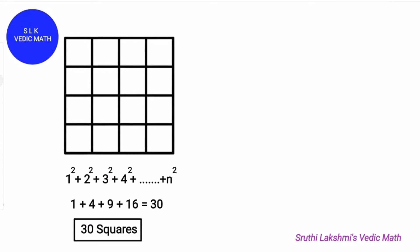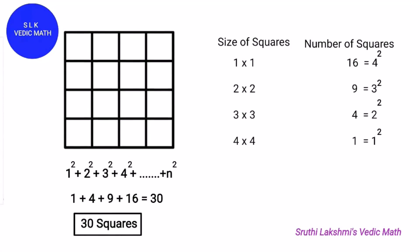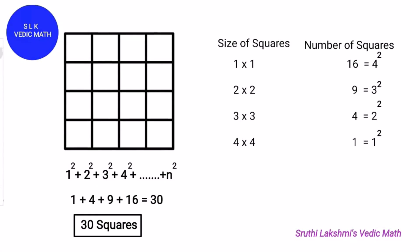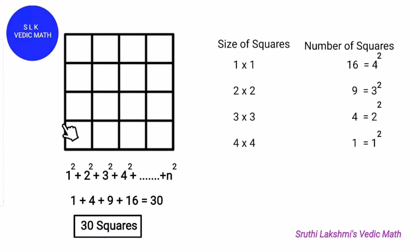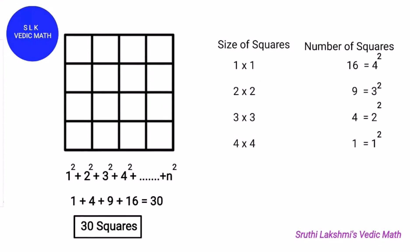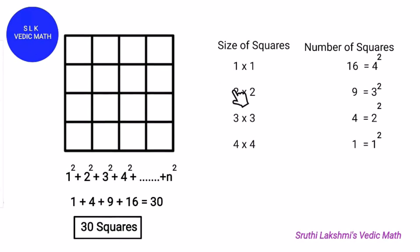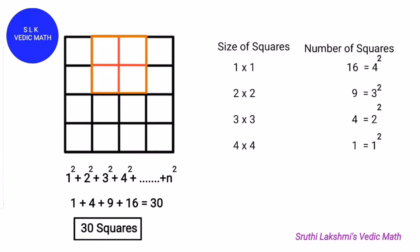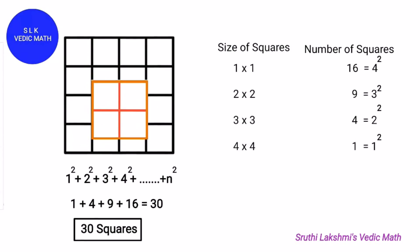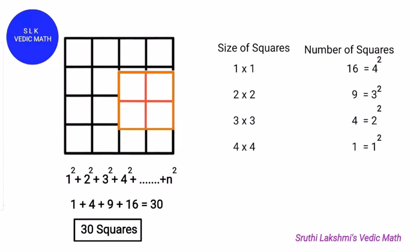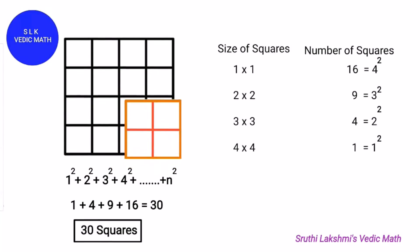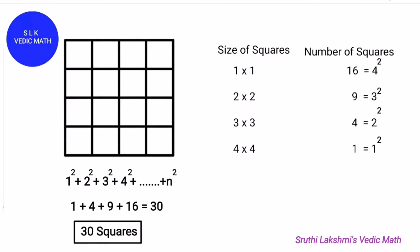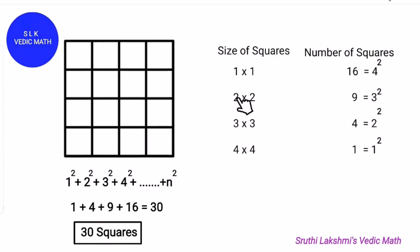Now let's verify our answer. First, let's find how many 1 by 1 squares there are. Since it's a 4 by 4 grid, there are 16 one-by-one squares. Now let's find how many 2 by 2 squares there are: 1, 2, 3, 4, 5, 6, 7, 8 and 9. So there are 9 two-by-two squares.